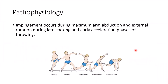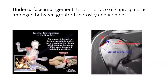The pathophysiology: impingement occurs when the arm is abducted and externally rotated during the late cocking phase and early acceleration phase of throwing. The undersurface of the supraspinatus is impinged between the greater tuberosity and the glenoid. In the illustration, the glenoid is shown here, the humerus here, and the supraspinatus is impinged on its undersurface — above is the subacromial area and below is the internal impingement zone on the undersurface of the supraspinatus. MRI is used to look for any abnormality on this surface of the tendon.